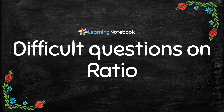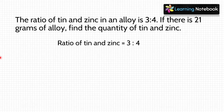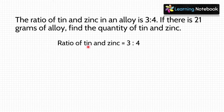Now, we will do some difficult questions on ratio. Question: the ratio of tin and zinc in an alloy is 3 is to 4. If there is 21 grams of alloy, find the quantity of tin and zinc. The ratio of tin and zinc is given as 3 is to 4, which means if total 7 grams of alloy is there, 3 grams of tin is present and 4 grams of zinc is present.